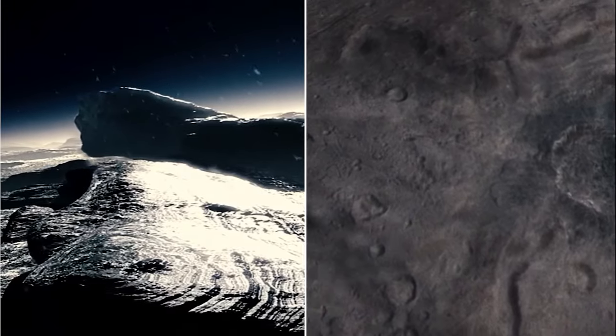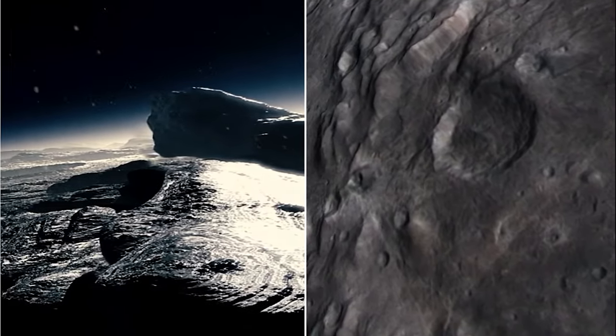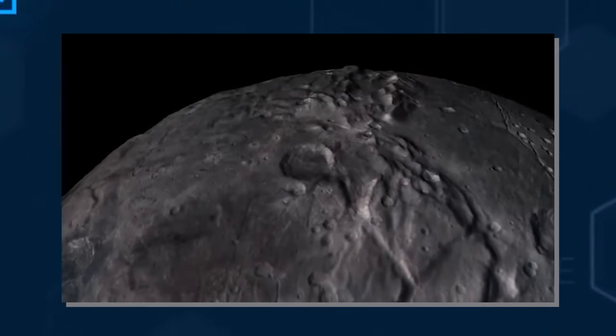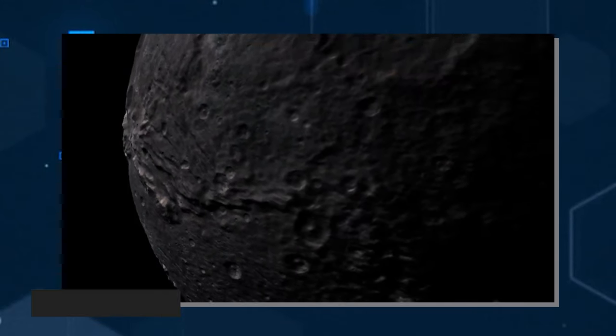To the north of Vulcan Planum, near the pole, lies the massive Oz Terra, marked by numerous craters. It is separated from Vulcan Planum by a system of sizable cliffs and crevices with a total height of approximately 1 kilometer.